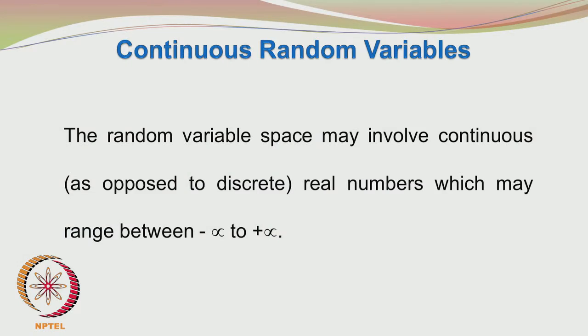For example, mole fraction lies between 0 and 1, but it can take any value between 0 and 1: 0.53, 0.54 and so on. Whereas if you roll a die, you can have only discrete entities like 1, 2, 3, 4, 5 and 6. So it may take real numbers which may range between minus infinity to plus infinity.